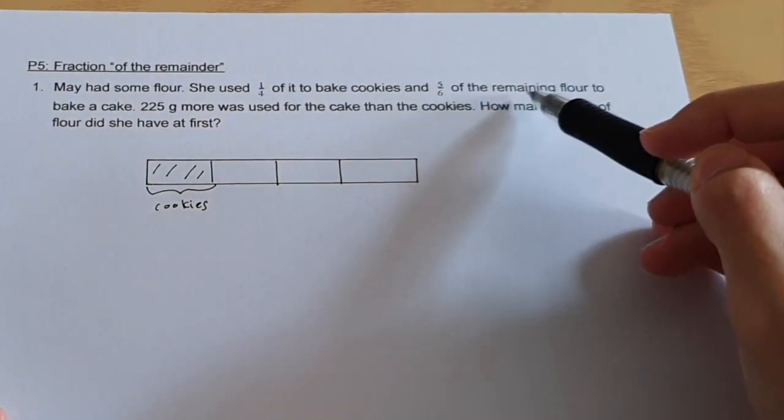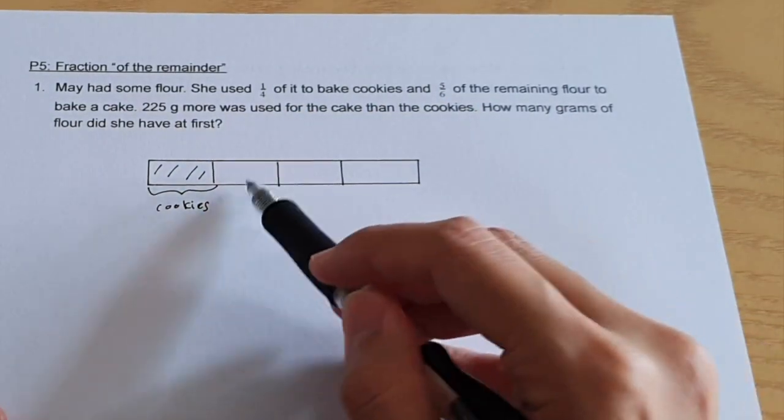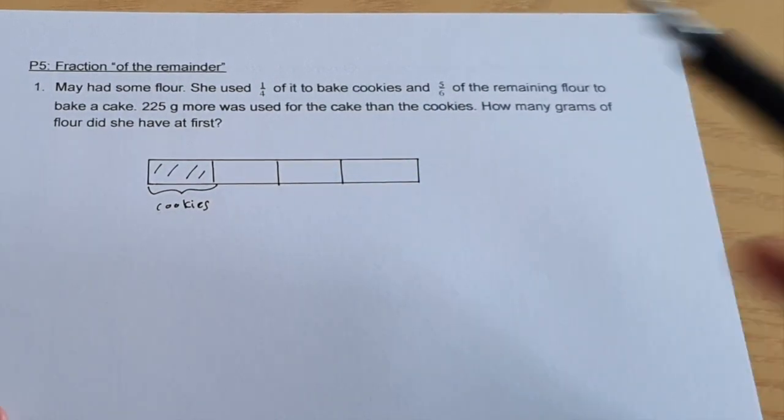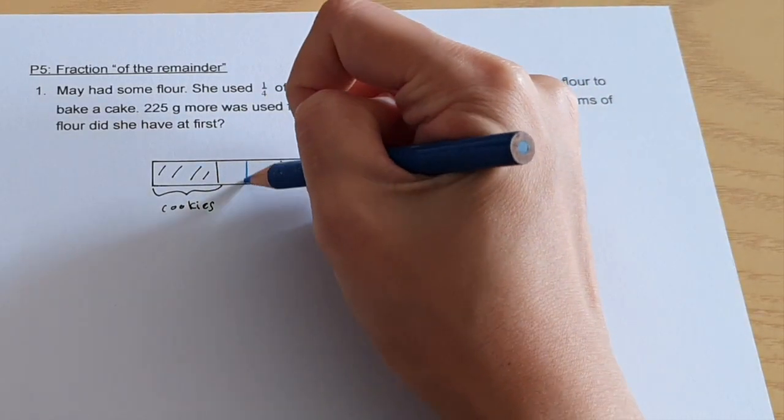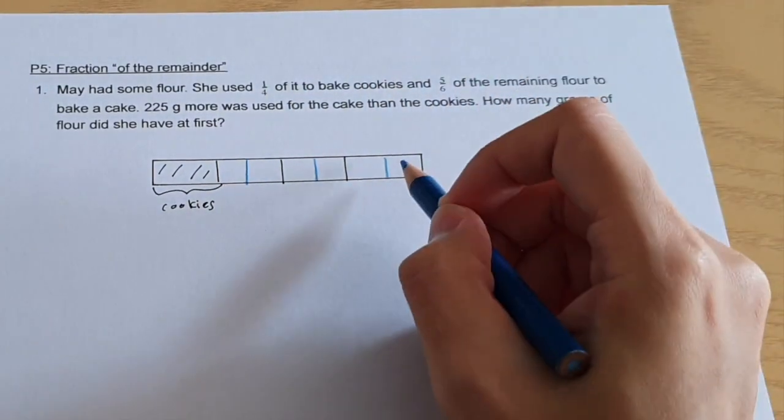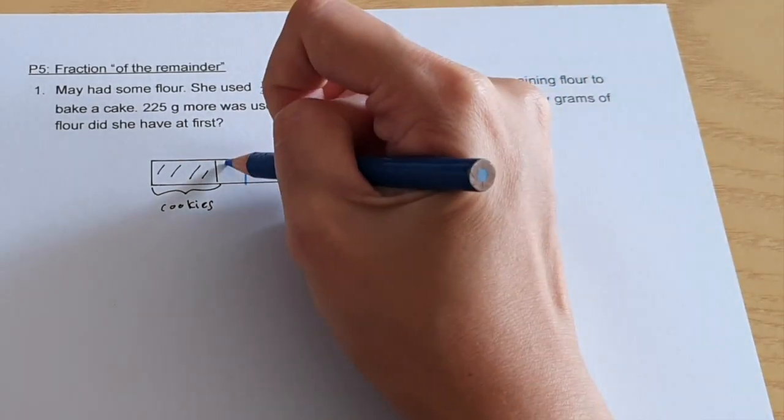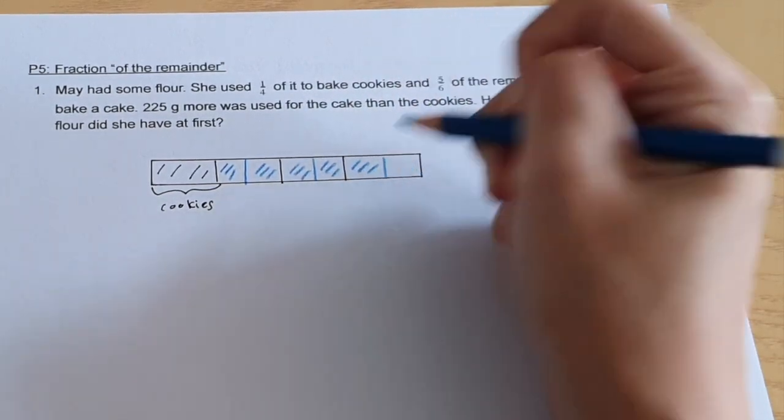Five-sixths of the remaining flour to bake a cake. So we look at the remainder. I have three units in the remainder but I need to cut it into six units. So now we get six units and she used five out of six. So one unit, two units, three, four, five.